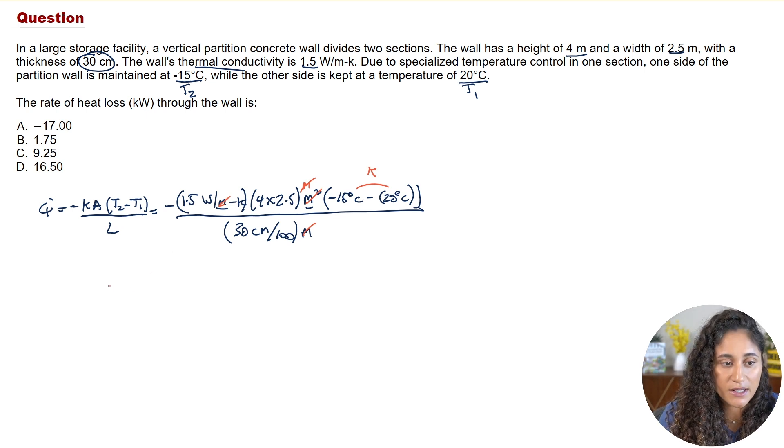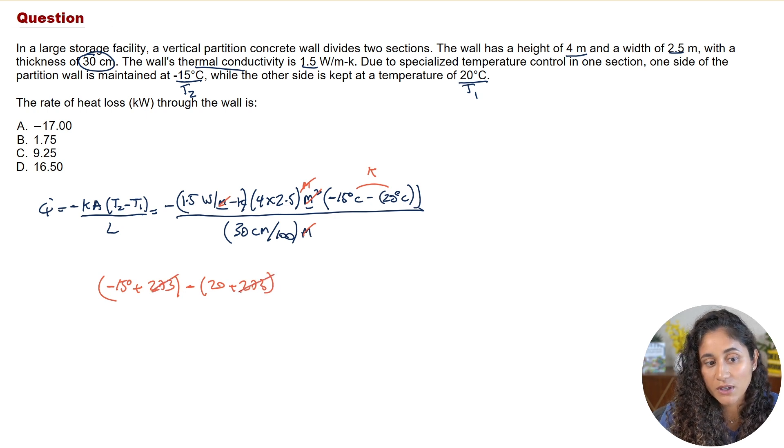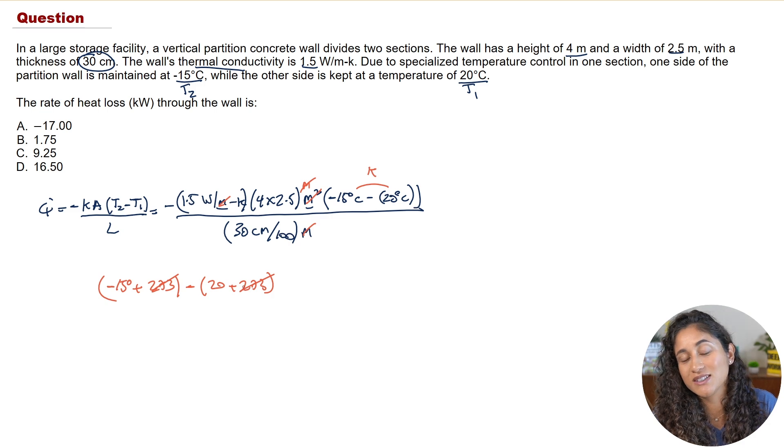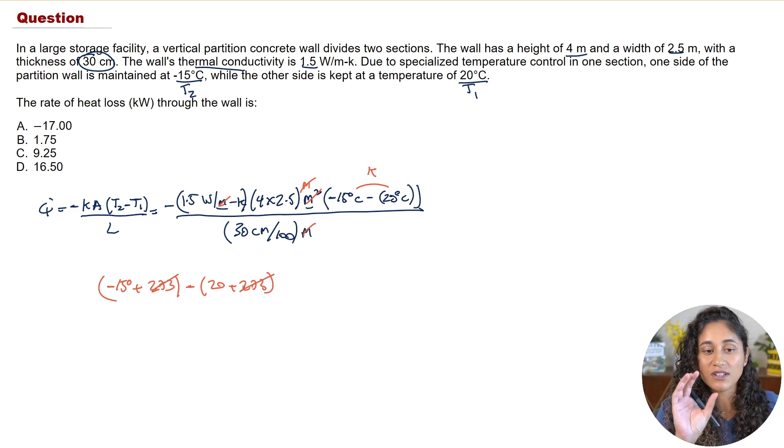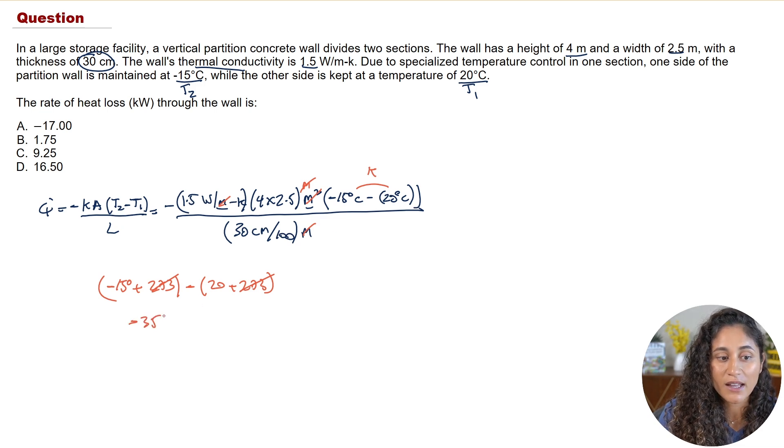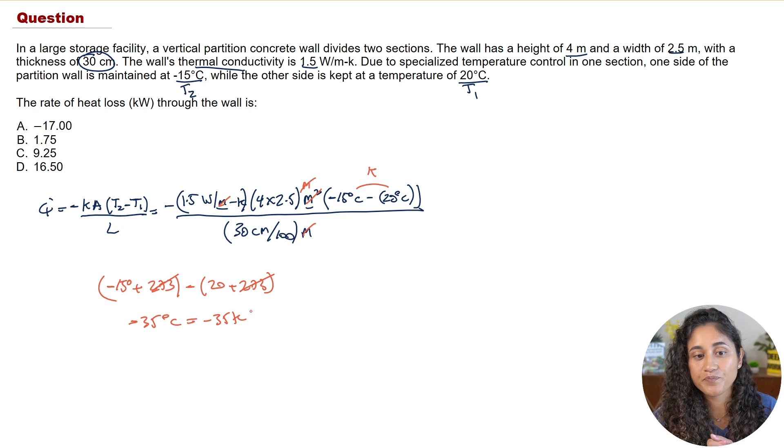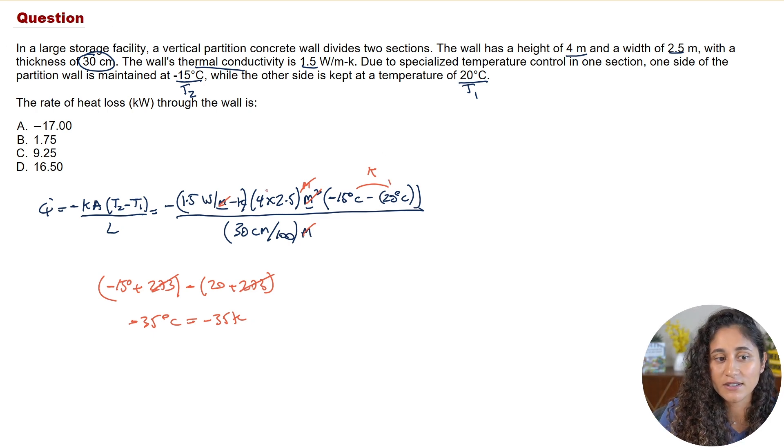So if we try to actually convert this to kelvin we're going to have minus 15 plus 273 then we're going to have minus 20 plus 273. Notice how the 273 cancels, we have 273 minus 273 and again that's because it's a temperature difference. So here we have minus 15 minus 20 so that gives us minus 35 either in celsius or in kelvin it's the same thing, it's a temperature difference. So technically this celsius is the same thing as kelvin so the kelvin cancels. Just remember that and remember you can only do that when you have a temperature difference, very important to remember that.